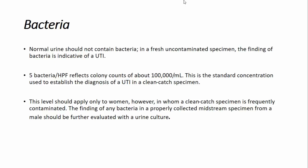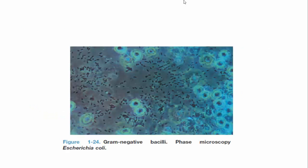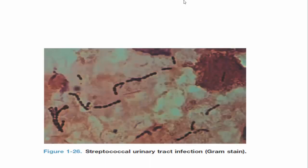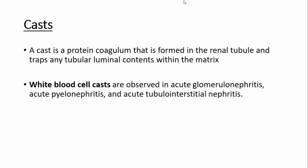For bacteria, five bacteria per high power field reflects a colony count of around 10⁵, the standard concentration used to establish a diagnosis of UTI after a clean catch specimen — though this label applies in women only after a clean catch urine sample. On microscopy, gram-negative bacteria, Staphylococcus aureus seen in clumps, and streptococcal UTI bacteria arranged in chains all appear differently, and everyone should know how to interpret them.